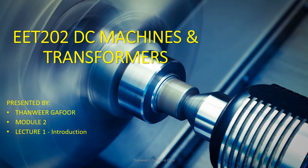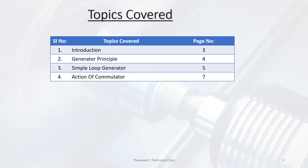Hi all, welcome back to EET 202 DC Machines and Transformers, section module first lecture series. This is just an introduction. We will cover topics: first, introduction; second, simple loop generator; and third, commutator — that is what we will discuss.